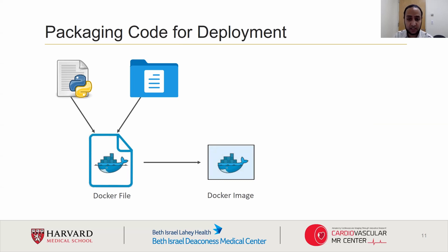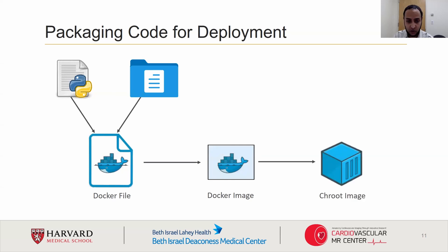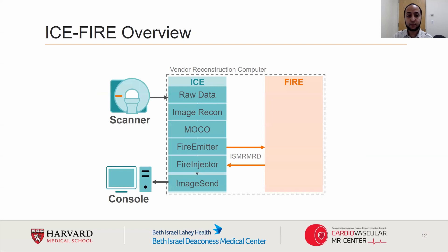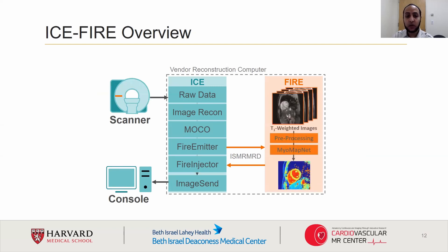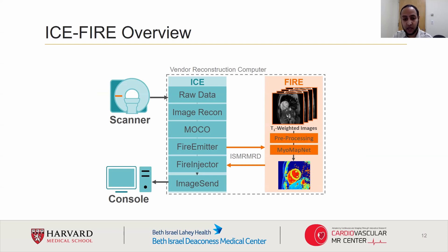We can then export the file system inside of the Docker image into a CRID image, which can then be mounted on the scanner's computer. Once the CRID image has been mounted on the FHIR server, we will have successfully deployed our deep learning model onto the scanner, and an MRI tech can now run the sequence as part of a regular clinical scan. Multiple CRID images can be mounted at the same time to allow for the easy deployment of multiple deep learning models.